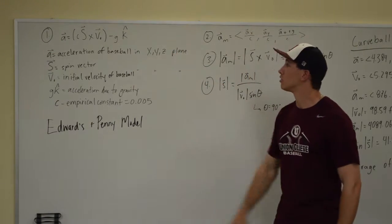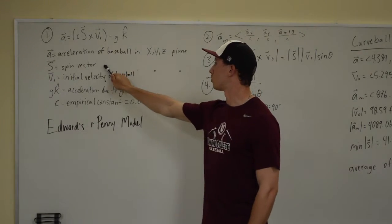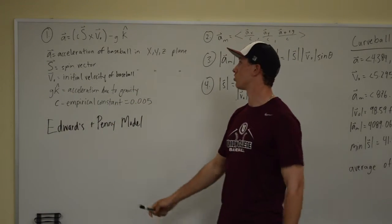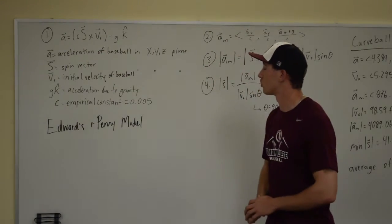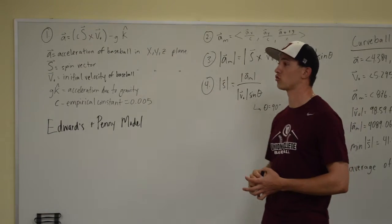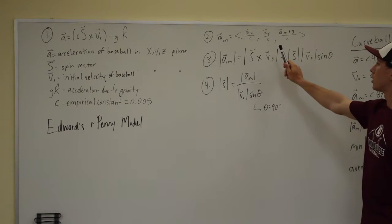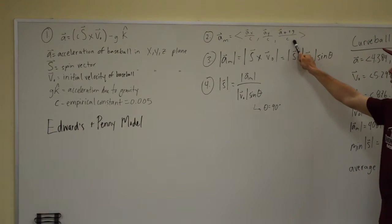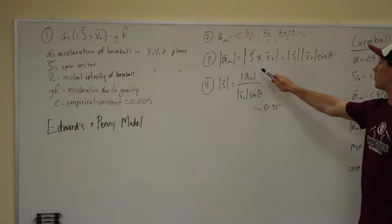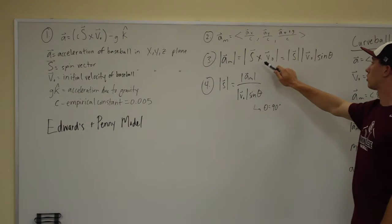This is the Edwards and Penny model, which determines the acceleration of a baseball due to certain factors such as the spin vector, the initial velocity, and the acceleration due to gravity. What we're interested in is solving this equation for the spin vector and analyzing the spin vector of two different pitches: fastball and curveball. So the first step in solving for the spin vector is just adding the acceleration due to gravity to the z component, since that's already taken into account.